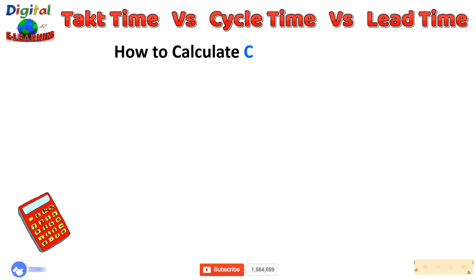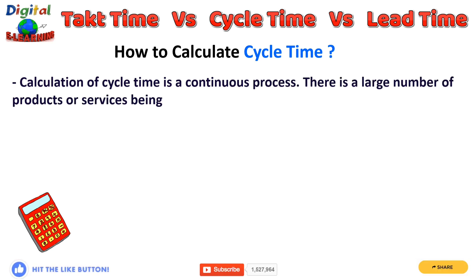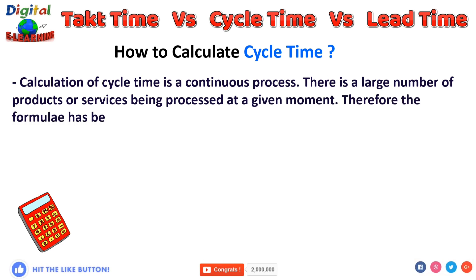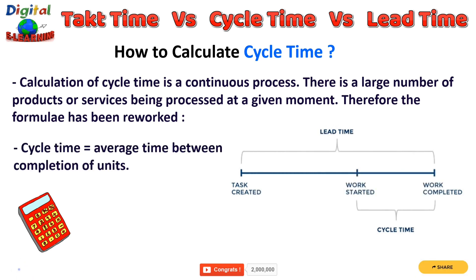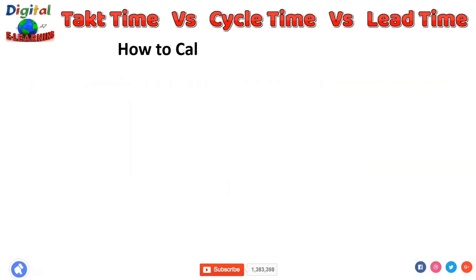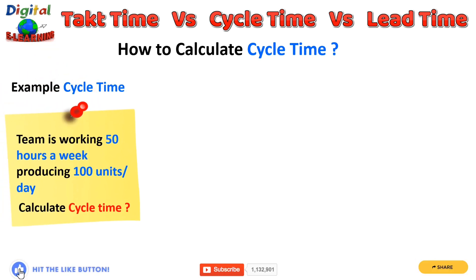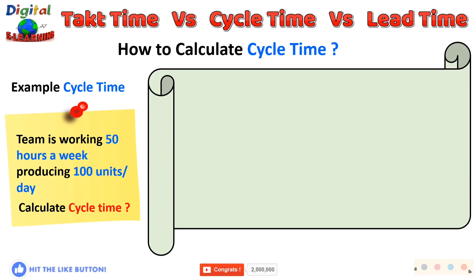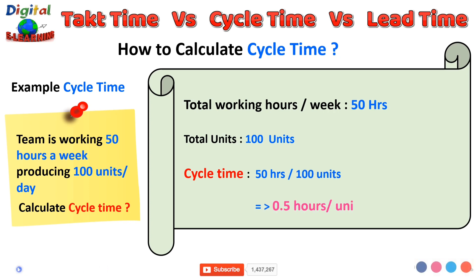So how do you calculate cycle time? The calculation of cycle time is a continuous process, as there are a large number of products or services being processed at any given moment, so the formula has been reworked. Cycle time is essentially the average time between the completion of units. For example, if we have 50 working hours in a week and are producing 100 units, the cycle time is 50 hours divided by 100 units — meaning every 0.5 hours we need to produce one unit to meet this demand.